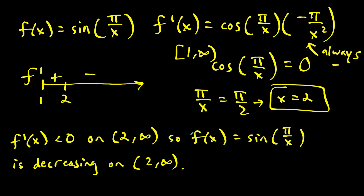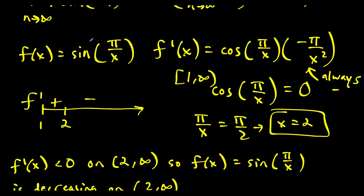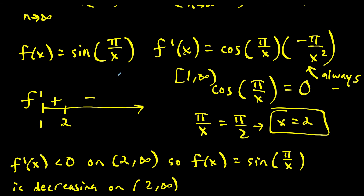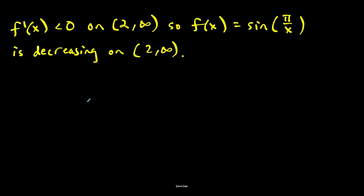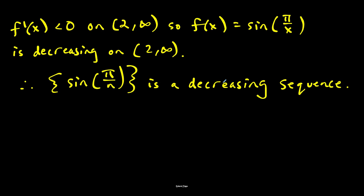Since f of x is decreasing on two to infinity, our sequence b sub n equals sine of pi over n is eventually decreasing. Combined with the limit going to zero, by the alternating series test the original series converges.